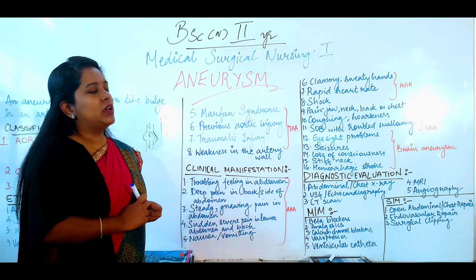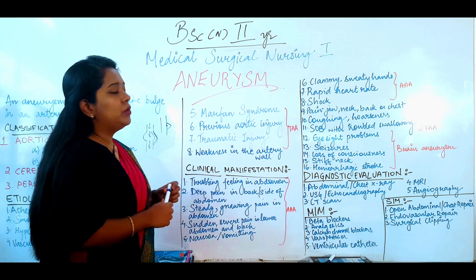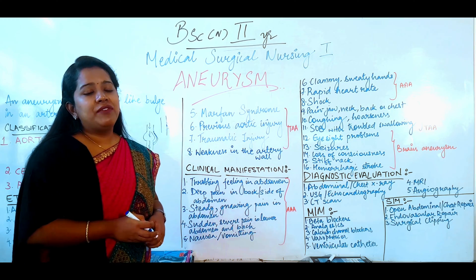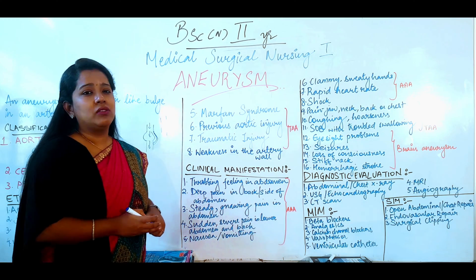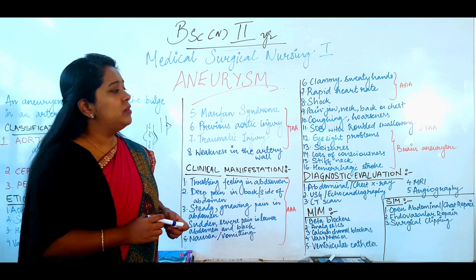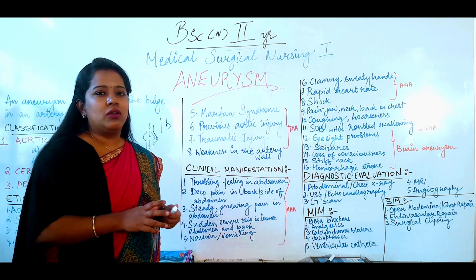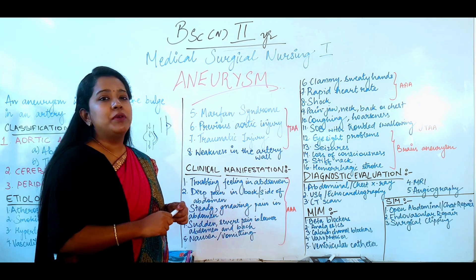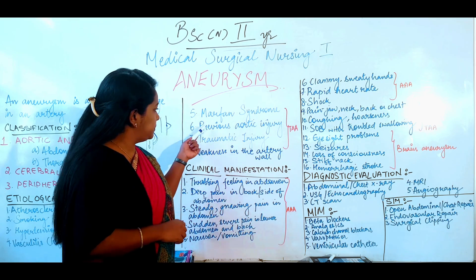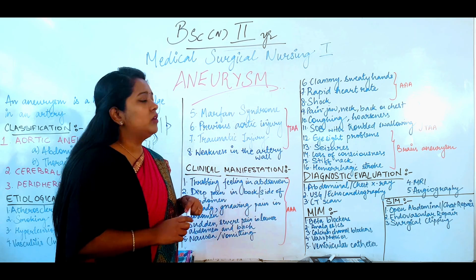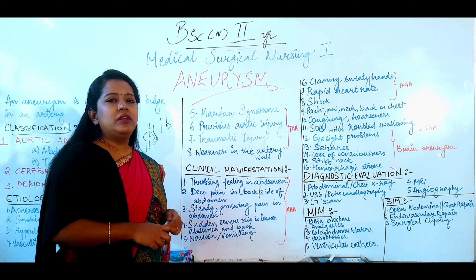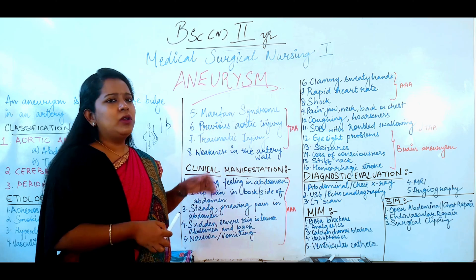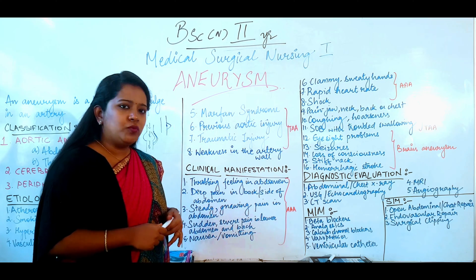Next we are talking about thoracic aneurysm. The thoracic aneurysm causes include Marfan syndrome — a genetic disorder that relates to connective tissue disorders. Connective tissue breakdown means the wall cannot maintain the proper structure of the artery. Previous aortic injury is another cause — if the aorta has a previous injury because of plaque deposition, atherosclerosis is also a cause.